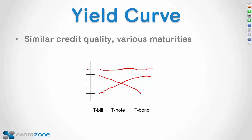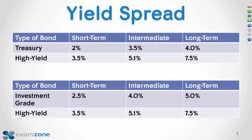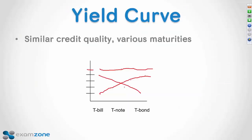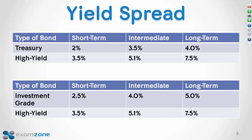The yield curve is typically shown using Treasuries, but it could use all investment-grade munis or all investment-grade corporates — you must have the same credit quality. The only difference is yields based on terms to maturity. Now, yield spread: terminology in the financial industry isn't standardized like science. The best definition of yield spread is same maturities, different credit quality — it's about shopping for a higher yield. Should you go with a product that offers a much higher yield, and how much more could you get?